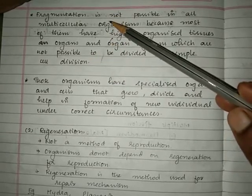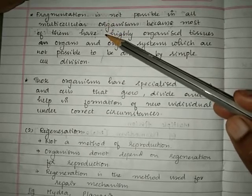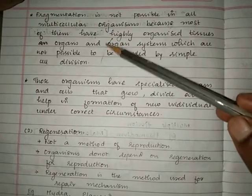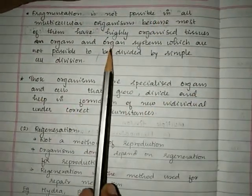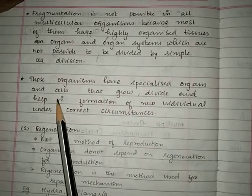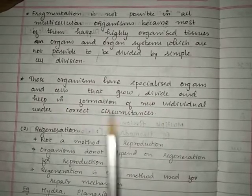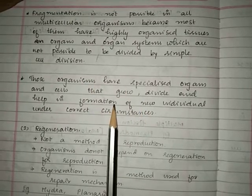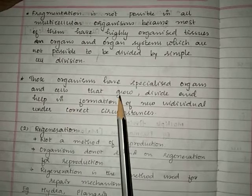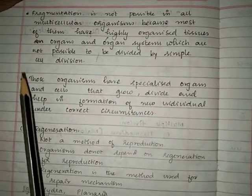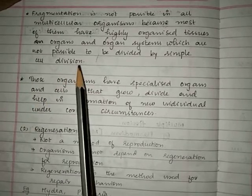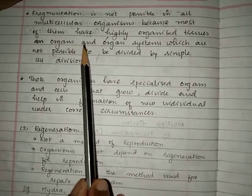Fragmentation is possible only in multicellular organisms with simple body organization where all cells can undergo division. For organisms with complex organization, there will be specialized cells that can grow, divide, and help in formation of new individuals under correct circumstances. Multicellular organisms with complex body organization can take up only sexual reproduction.